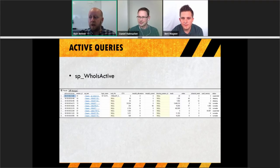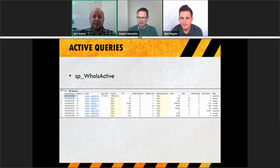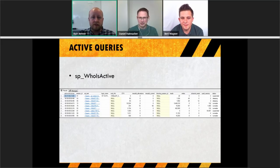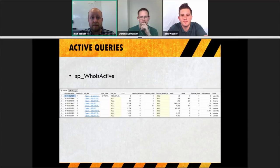sp_WhoIsActive also helps with blocking, which can be a massive pain. Instead of scrolling through thousands of rows, you might have just nine rows of data. I highly suggest you download the latest version, make sure you know how it works, and run it in your instance rather than using sp_who2. Once you've been through it and know blocking isn't an issue, if the problem isn't resolved, move on to the next step.